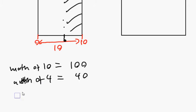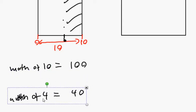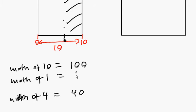A width of four would equal 40. There's an in-between step there. The in-between step is to always find out what a width of one is. So if you did a width of one, you find out it's ten, because it's ten times smaller. And then you just multiply it by four to get 40.